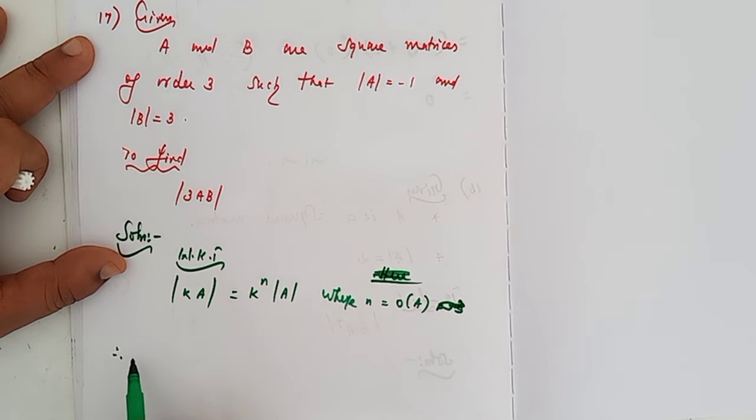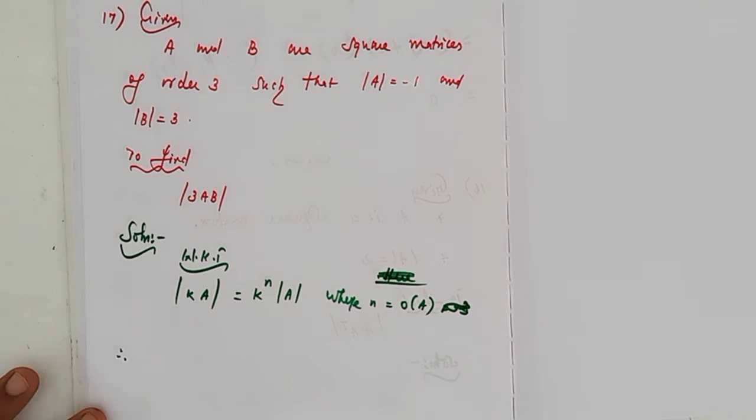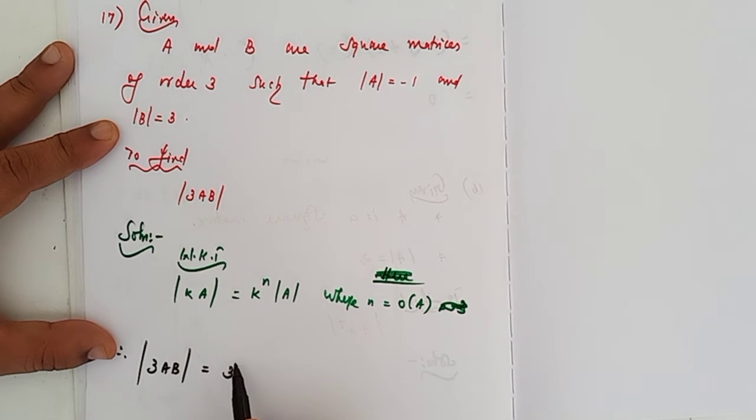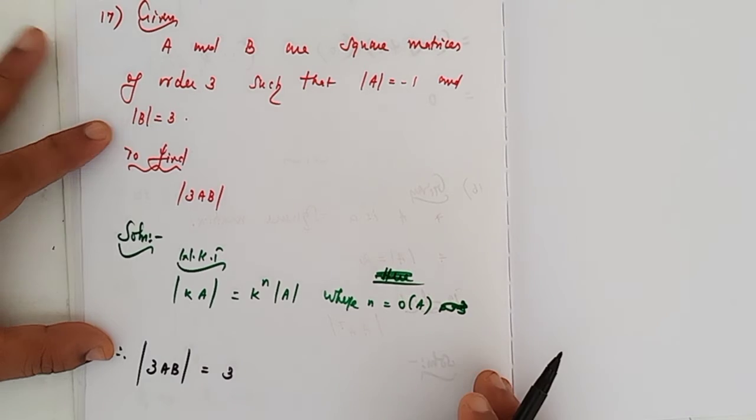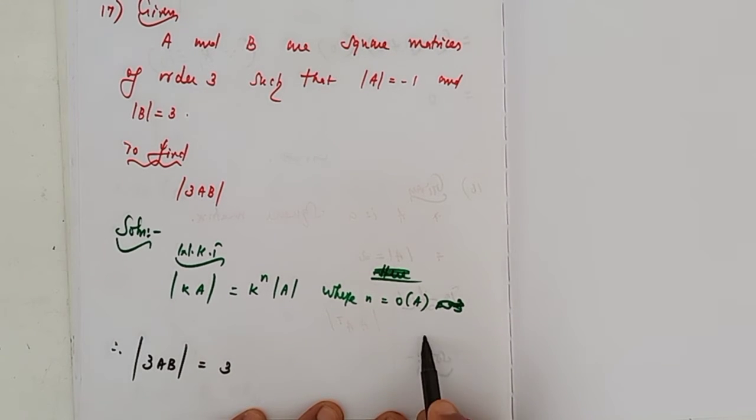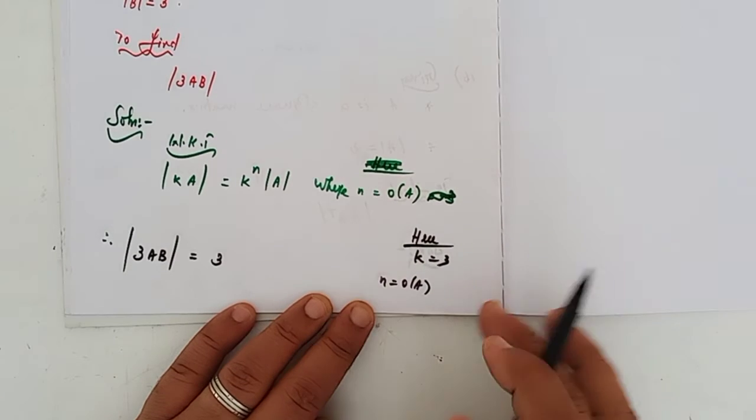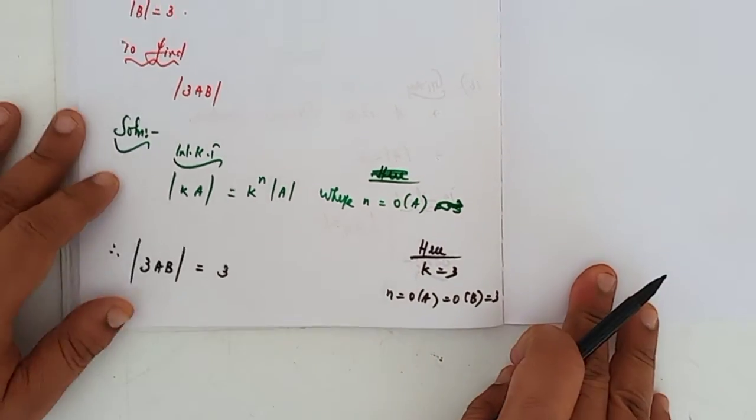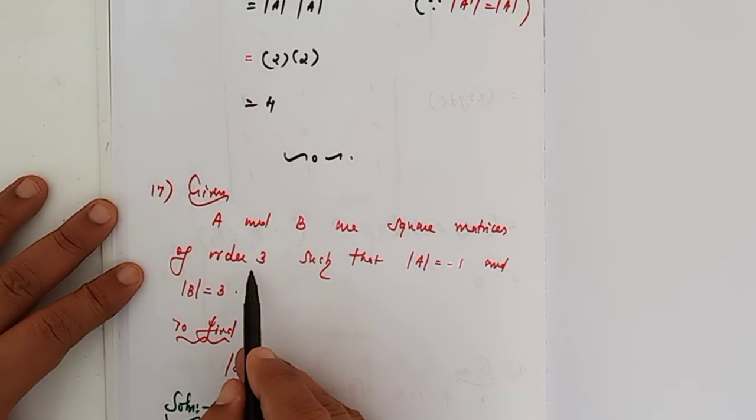Therefore, the determinant of 3AB equals 3 power n times determinant of AB. Here k equals 3, and n equals the order of A which equals the order of B, both are 3.